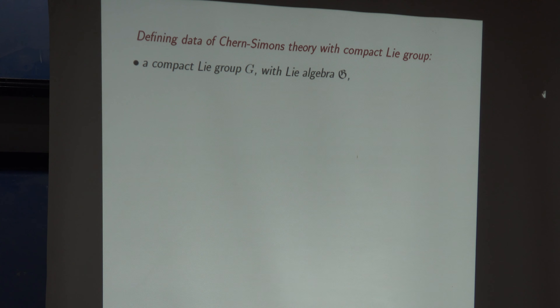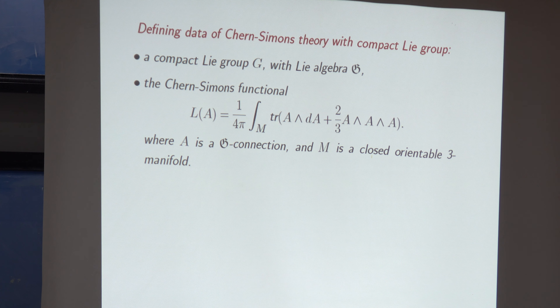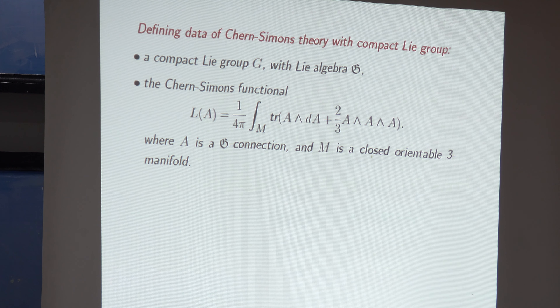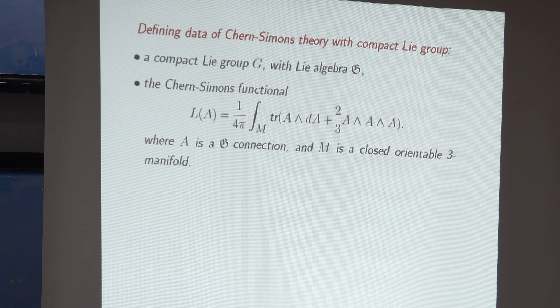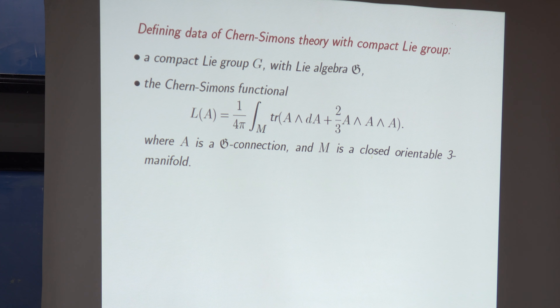Chern-Simons theory has a piece of defining data: a Lie group. People are trying to work with non-compact Lie groups, but that's really complicated, so I will stay in the case of compact Lie groups with their Lie algebra. Then there's the story of G-connections, which for simplicity you can think of as living in the trivial principal bundle on a three-dimensional manifold M, and think of them as matrix-valued one-forms.